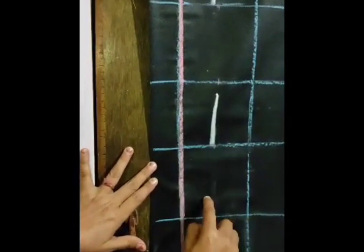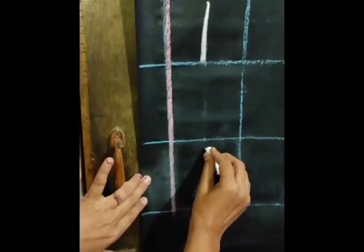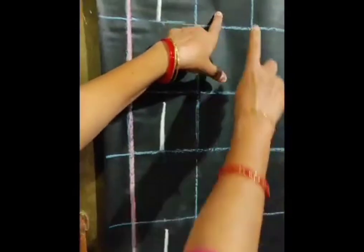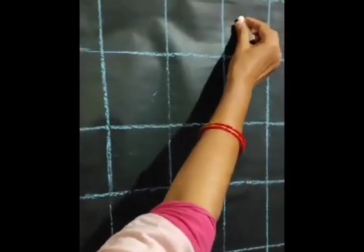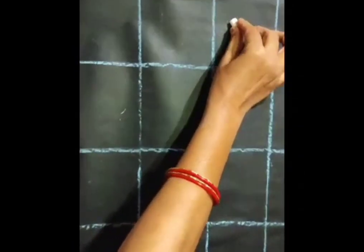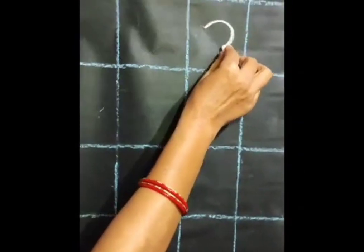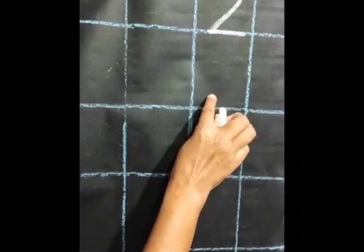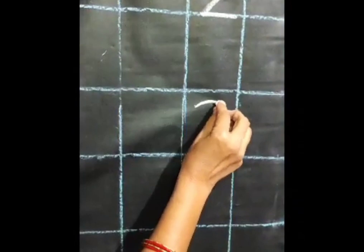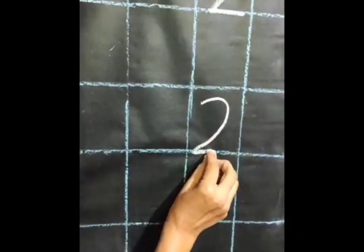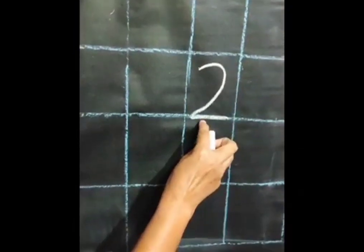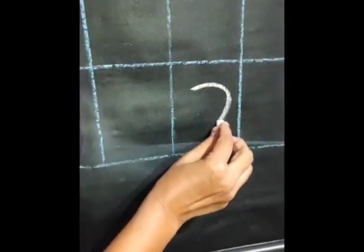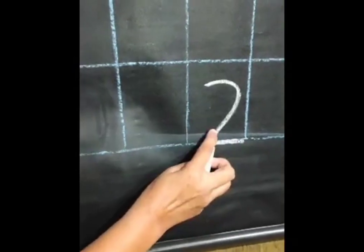Now, children, leave two boxes — one, two — and write in the third box. What will you write here? Number two. First, a curve, then a sleeping line. Then leave one box or square and write down below in the next square: a curve and a sleeping line. This is number two. Again, leave one square or box and write a curve and a sleeping line. This is number two.